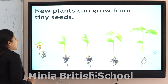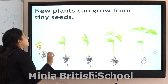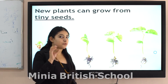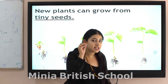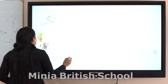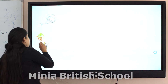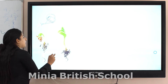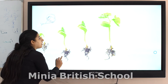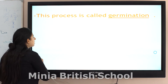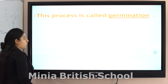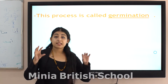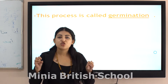We said that new plants can grow from tiny seeds. From what? From tiny seeds. That's true. It's not hard to see. If you water this seed today, it will get bigger and bigger. So plants can grow. This process is called germination.